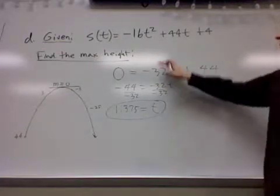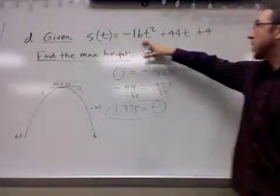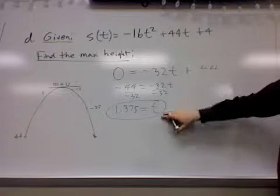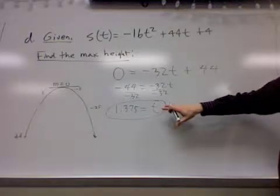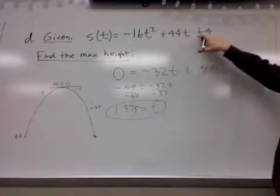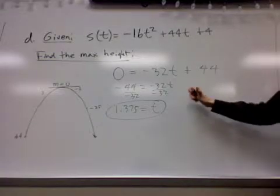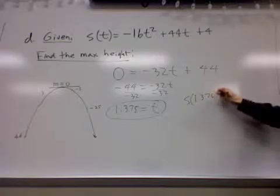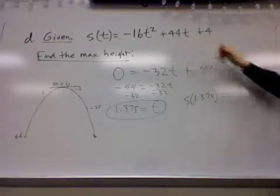So what's left to do is find the maximum height. This is the equation for the height. So you find your answer by using the derivative equation, and then you continue on, finish the final answer by using the original equation. So all that's left to do is plug in 1.375 into the original equation.